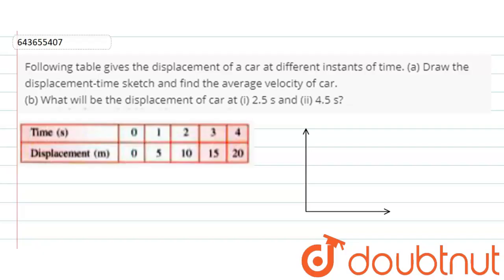Hello friends, so our question is: following table gives the displacement of the car at different instants of time. Part A: Draw the displacement-time sketch and find the average velocity of the car. Part B: What will be the displacement of car at 2.5 seconds and 4.5 seconds.